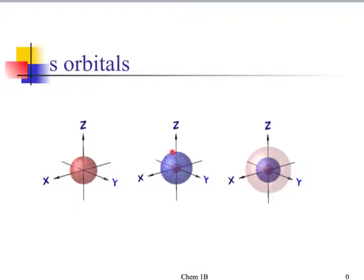For the second S orbital, it would be this blue cloud, which is bigger than the red cloud. See how the red cloud is inside it — the blue cloud gets even larger, and then this dull orange cloud gets even larger. So it's just the probability of finding that electron there.